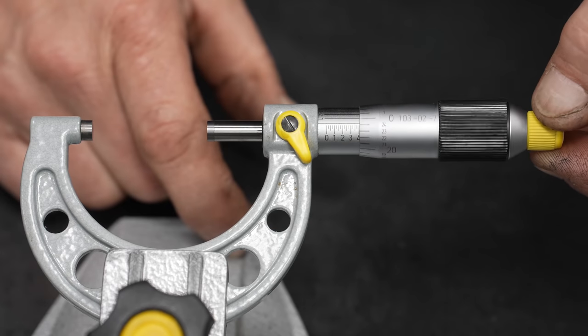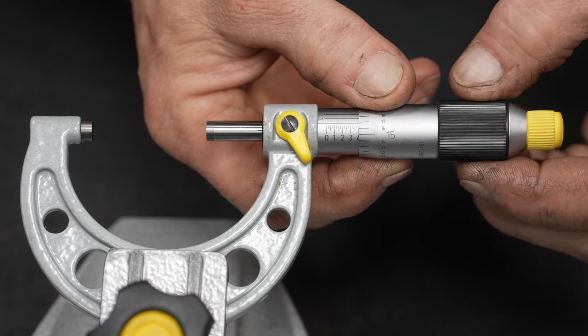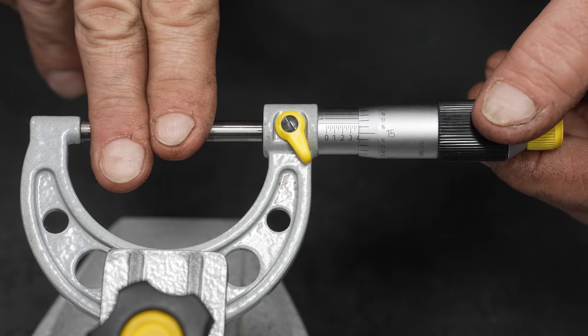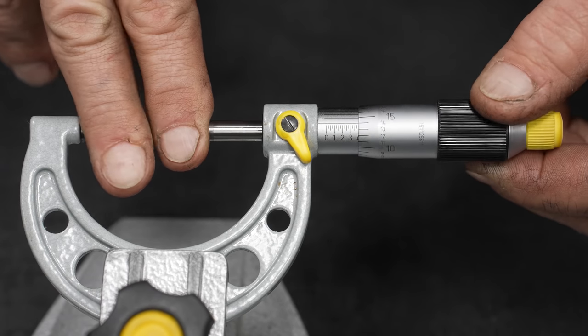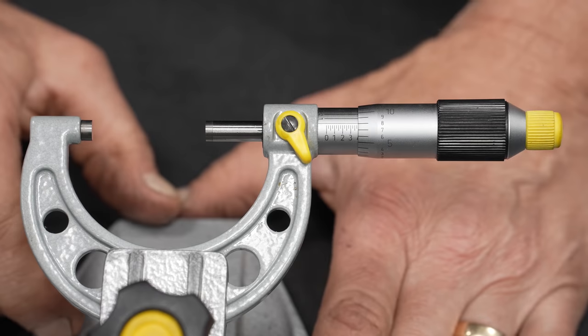You have one grip, this one does not allow any slippage, and then this one is ratcheting. The purpose of the ratchet is so when you come in onto a part, you do not over torque the micrometers and basically cause a flex and a bad measurement.